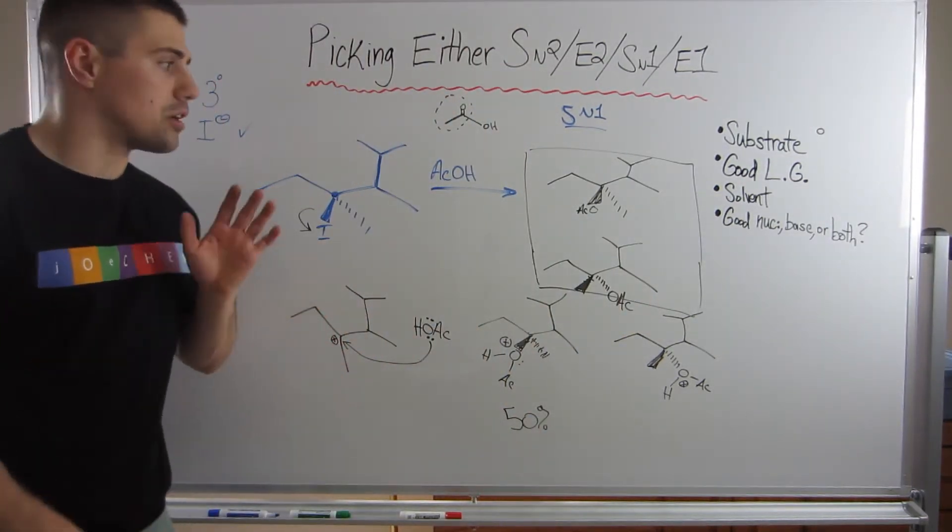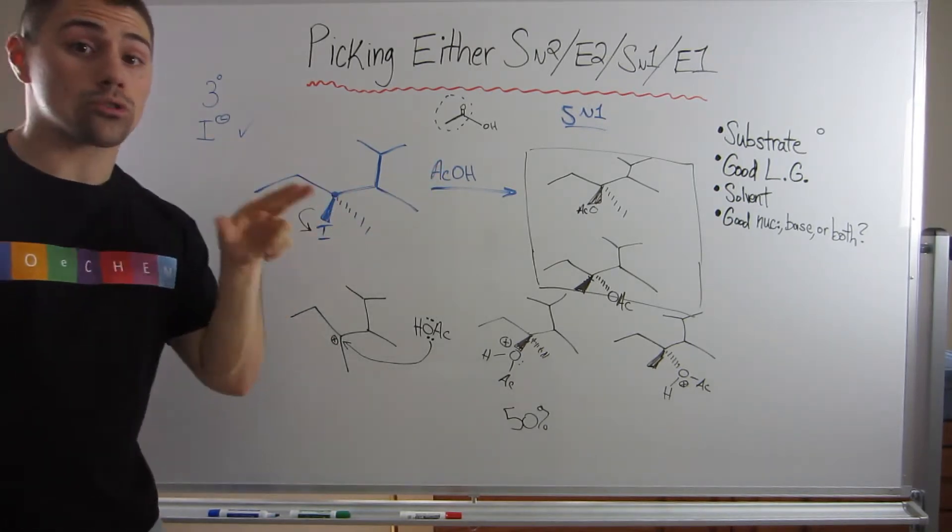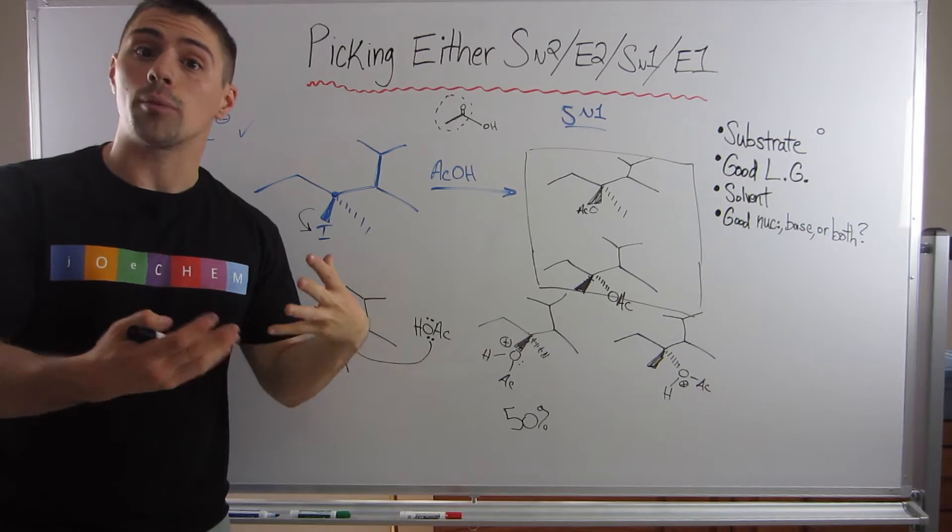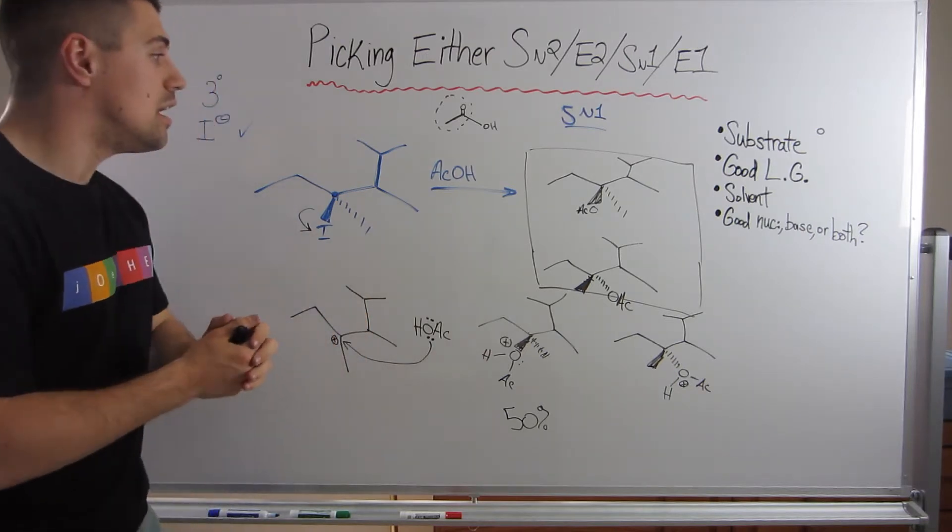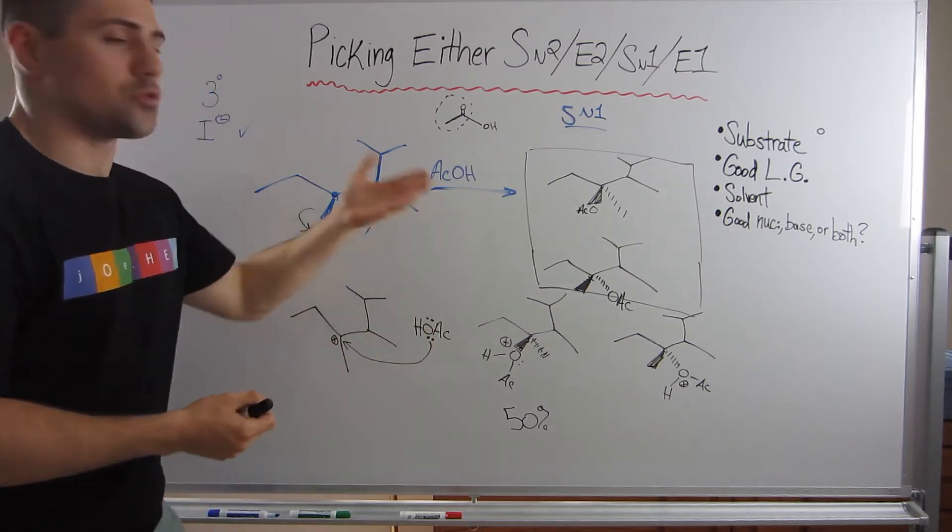So a little bit of a tricky one, right? But it all came down to tertiary substrate, good leaving group. We looked at the arrow, polar protic scenario, so good for forming carbocations, right? Good for solvolysis. And not a great base, right? Carboxylic acid. So it's just a weak nucleophile.